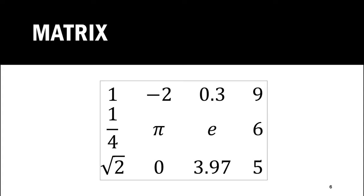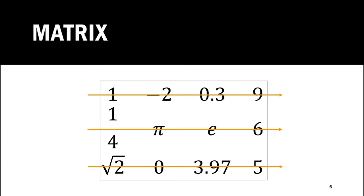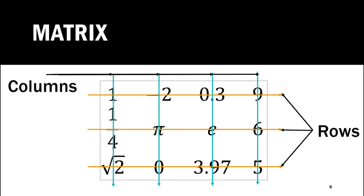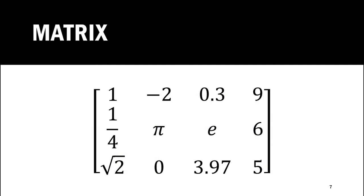In this rectangular arrangement, we have some horizontal arrays and some vertical arrays. These horizontal arrays are called as rows and the vertical arrays are called as columns. In this matrix, we have three horizontal arrays, that is three rows. The first row is denoted by R1, the second by R2, and the third by R3.